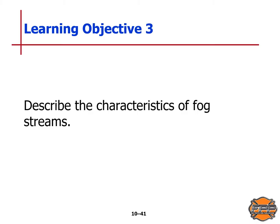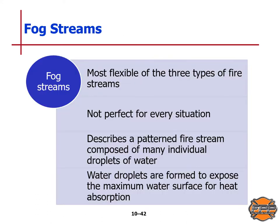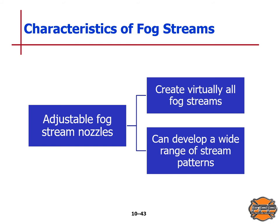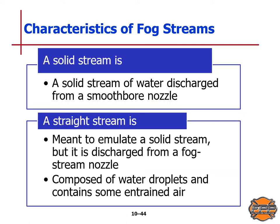Learning objective three: describe the characteristics of fog streams. Fog streams are the most flexible of the three types of fire streams, though not perfect for every situation. A fog stream is a patterned fire stream composed of many individual drops of water, formed to expose the maximum water surface for heat absorption. A solid stream is discharged from a smoothbore nozzle, while a straight stream is meant to emulate a solid stream but is discharged from a fog stream nozzle — it is composed of water droplets and contains some entrained air.